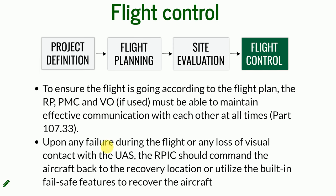Emergency procedures are also critical. Each UAS is different and each software is different. You can encounter errors during the flight, and if you are not prepared for what to do when an error appears — or if there is a failure or an emergency even on the ground — you might not react properly. This can lower the safety of people or even result in the loss of the UAS. We need to know recovery locations and how to use the built-in failsafe features to recover the aircraft.